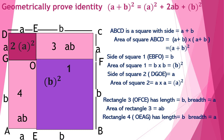Rectangle 4, labeled OEAG, also has length equal to b and breadth equal to a, so its area is also ab.